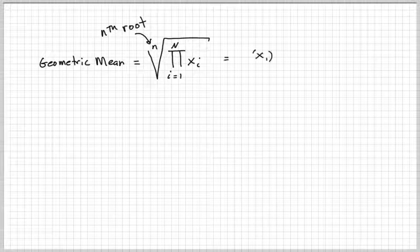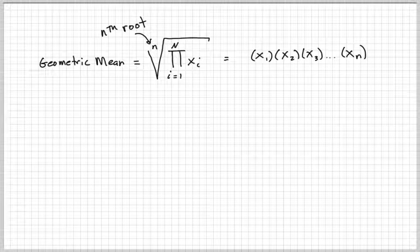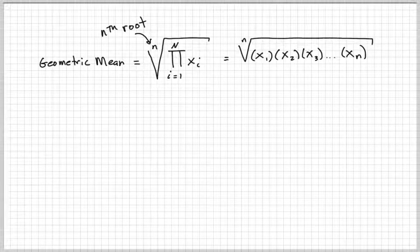That means you're going to multiply, for example, x1 times x2 times x3 all the way to xn. So if you had eight values, then n will equal eight, and you take the nth root of all those numbers that you multiplied.